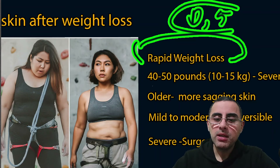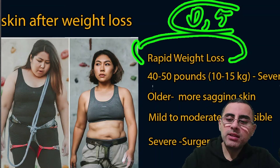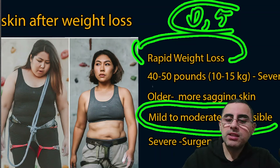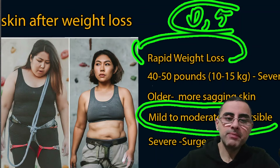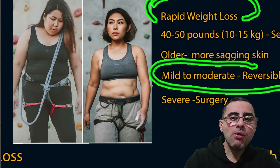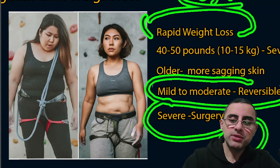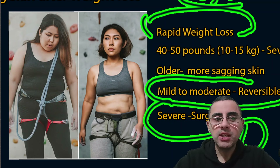If sagging skin is mild to moderate, it will reverse over time — in several months or up to one year, it will reverse in many cases. But if sagging skin is severe, then surgery is the only solution; no other solution exists for important and severe sagging skin.